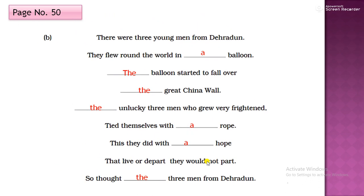Next. At page 50. There were three young men from Dehradun. They flew round the world in a balloon. The balloon started to fall over the great China wall. The great China wall. So this is, the China wall is specific thing. And the, this balloon is mentioned second time. It is already used. And in single balloon they are going, not two and it is not possible even. So article A, the, the, like this. The unlucky three men. Now why unlucky three men? Because these men are already mentioned. Three young men. So when we repeat the thing second time, remember, use article The.